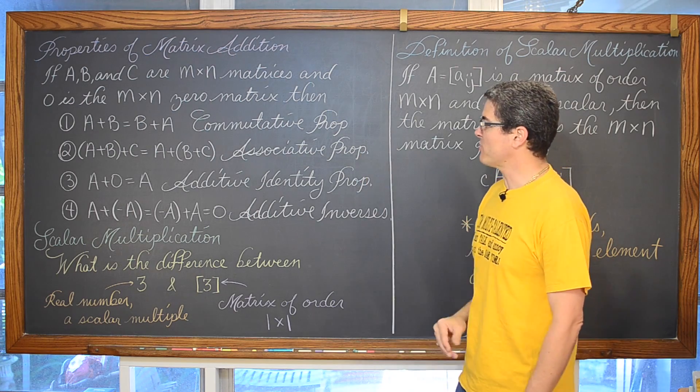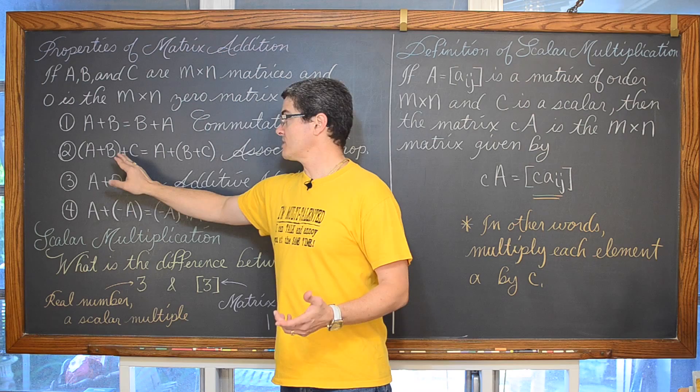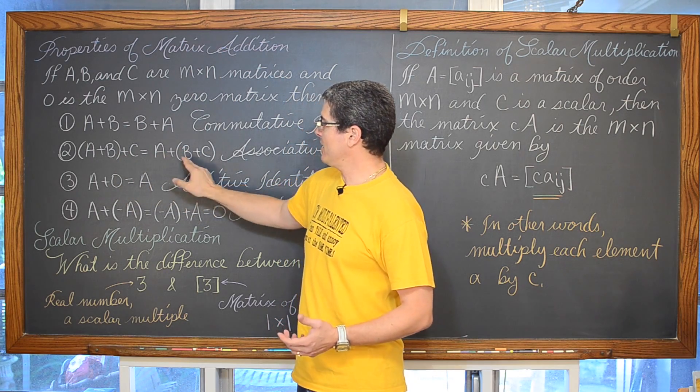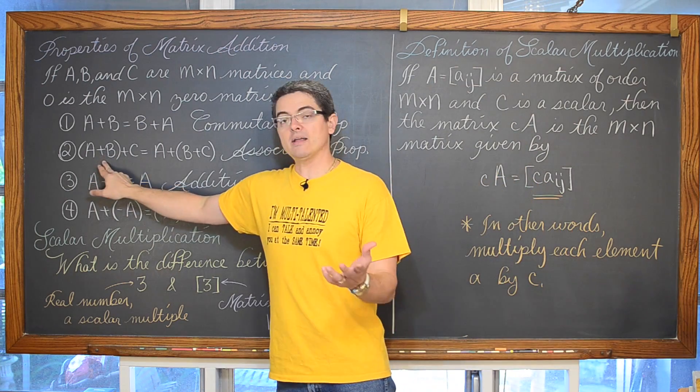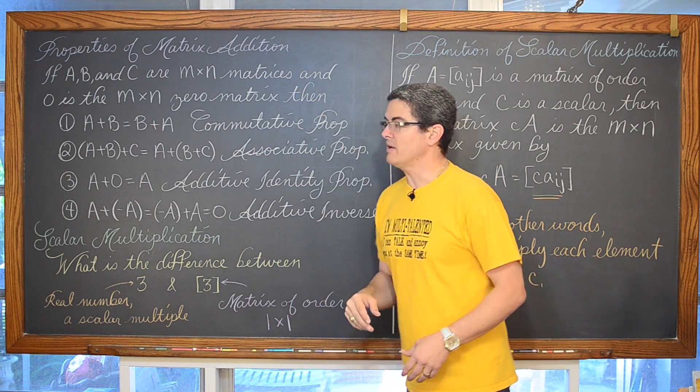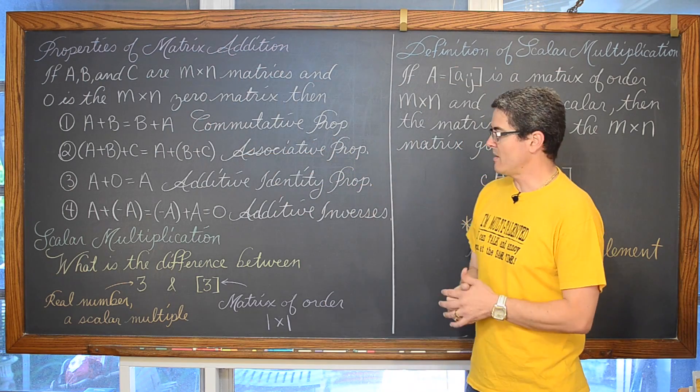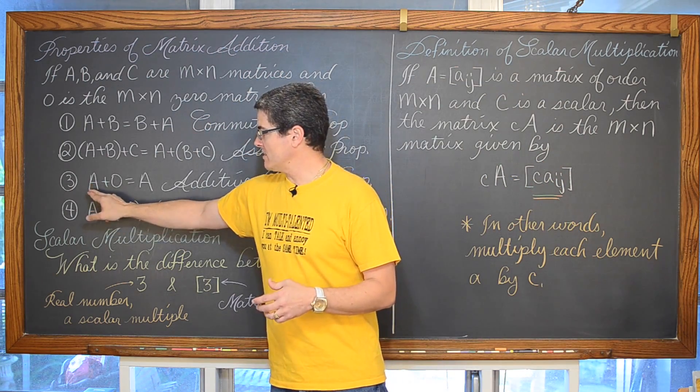We also have the associative property. If we have some grouping where A plus B you are going to get added first and then you add C, well you can regroup that and have A plus the grouping, the parentheses, B plus C. So instead of adding A and B first, you can add B and C first, then add A, and you will get the same answer.